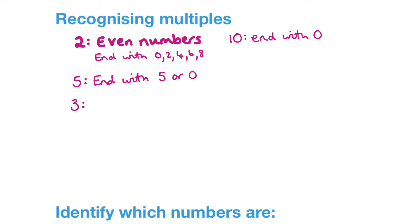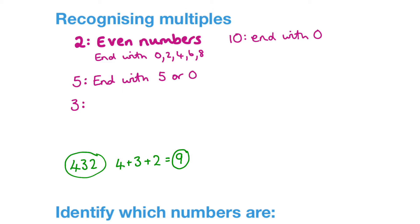There are a few different times tables you can spot just by looking at the numbers. So did you come up with many? I already mentioned the two times table. They're called the even numbers. You can spot them because they end with a zero, two, four, six, or eight. So multiples of two are any numbers that end with these digits.